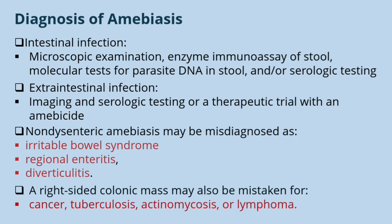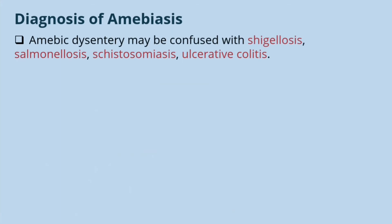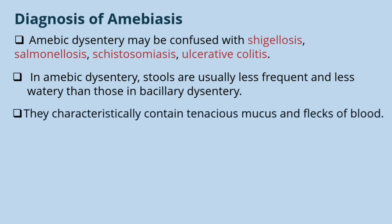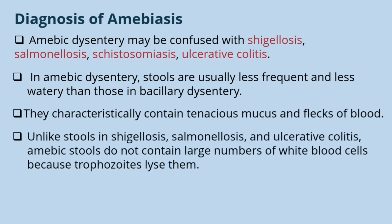A right-sided colonic mass may be mistaken for cancer, tuberculosis, actinomycosis, or lymphoma. Amoebic dysentery may be confused with shigellosis, salmonellosis, schistosomiasis, or ulcerative colitis. In amoebic dysentery, stools are usually less frequent and less watery than those in bacillary dysentery. They characteristically contain tenacious mucus and flakes of blood. Unlike stools in shigellosis, salmonellosis, and ulcerative colitis, amoebic stools do not contain large numbers of white blood cells because the trophozoites lyse them.